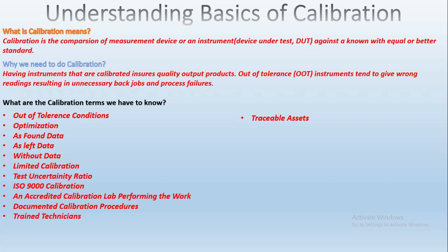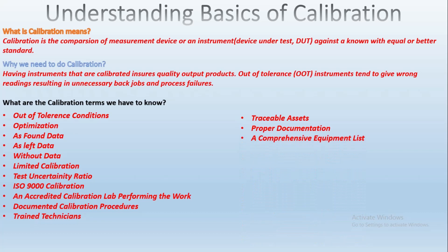The next requirement is traceable assets — the calibration provider must be able to demonstrate an unbroken chain of traceability back to NIST. The next is proper documentation — all critical aspects of the calibration must be properly documented for the certificate to be recognized by an ISO auditor.